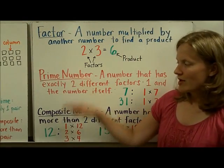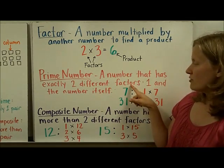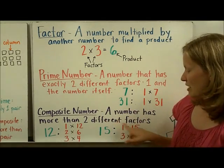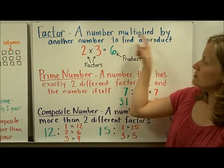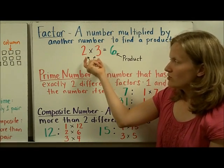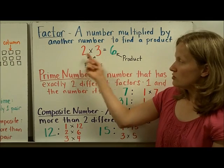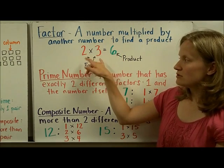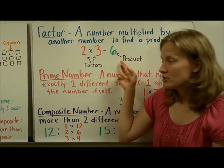First, when we want to talk about prime and composite numbers, you're going to see both of those definitions have the word factor in them. So we have to make sure we know what a factor means. A factor is a number multiplied by another number to find a product. In other words, the two numbers that you multiply together in a multiplication problem to get the answer. So in 2 times 3 equals 6, 2 and 3 are the factors. 6 is the product or the answer to a multiplication problem.